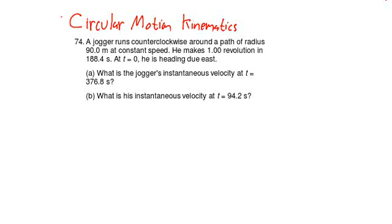And so we're asked in this problem to find the jogger's instantaneous velocity at two different times, and so we'll need to draw a diagram so we can get the vector nature of the velocity right. But before we do that, we might as well go ahead and figure out what the speed of the jogger is because they're going around the track at a constant speed, and we can figure that out from the information that's given.